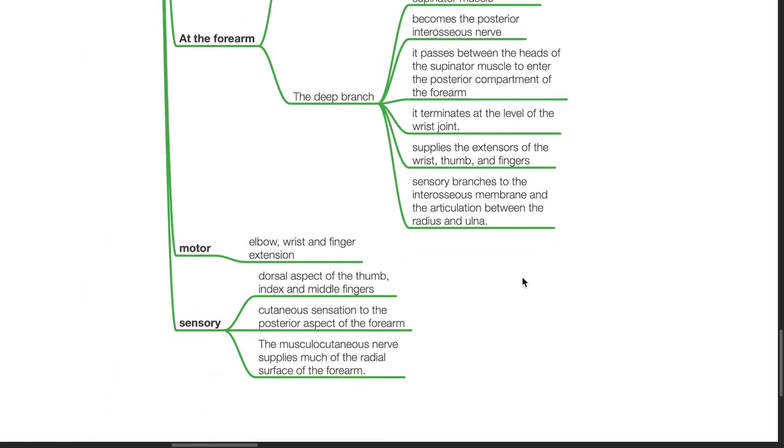Motor supply of the radial nerve includes the elbow, wrist and finger extensors, and sensory supply to the dorsal aspect of the thumb, index and middle fingers. Cutaneous sensation to the posterior aspect of the forearm. The musculocutaneous nerve provides sensory supply to much of the radial surface of the forearm.